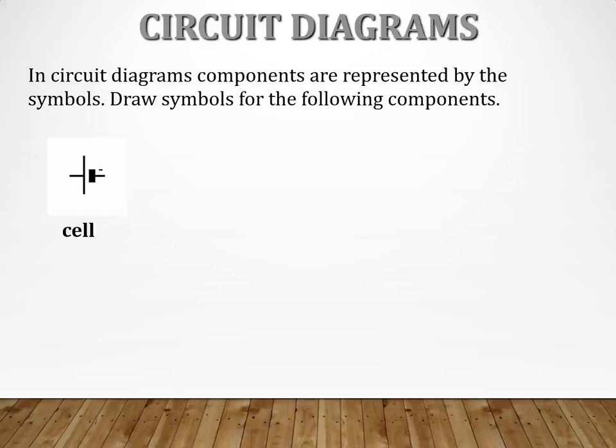Now, with the cell, you've got this very short and thick line, and that is your negative. Short and thick is negative. And on the other hand, you've got this long and thin line that is your positive terminal. So the terminals are different. Negative, short and thick, and positive, long and thin. You must be very careful when you draw a cell.